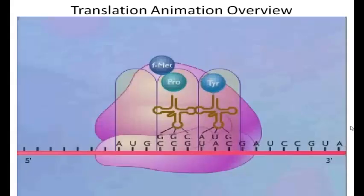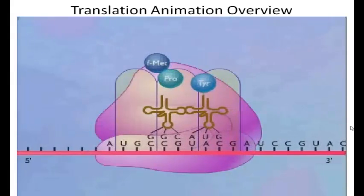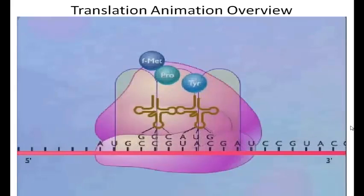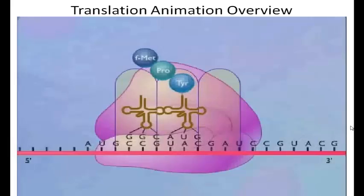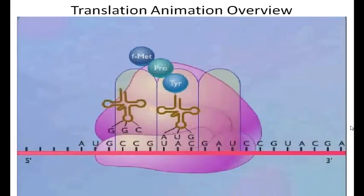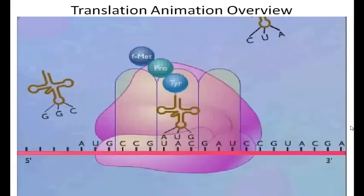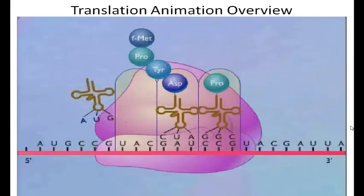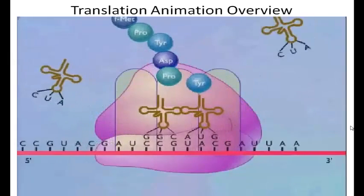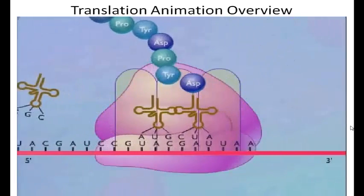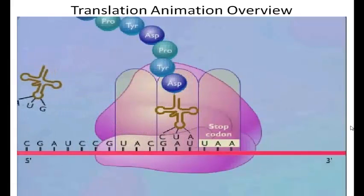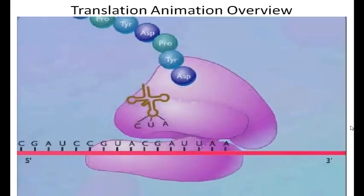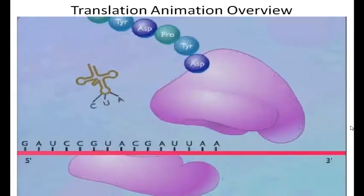The ribosome advances a distance of one codon, and the transfer RNA that carried the formyl methionine is released at the E-site. A transfer RNA carrying the next amino acid moves into the A-site where the anticodon on the transfer RNA matches the codon on the messenger RNA. The ribosome continues to move along the messenger RNA, and new amino acids are added to the growing polypeptide chain. Elongation is terminated when a stop codon moves into the A-site — a stop codon does not specify an amino acid and has no corresponding transfer RNA. The ribosome dissociates into the 30S and 50S subunits, and the messenger RNA and protein are released.